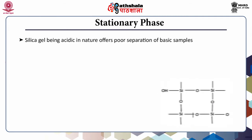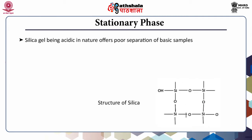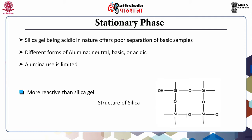Silica gel is acidic in nature and thus offers poor separation of basic samples. Different forms of alumina are available: neutral alumina, basic alumina, and acidic alumina. However, alumina cannot separate large sample sizes unlike silica gel under a given layer thickness. Alumina is also more reactive compared to silica gel, which limits its uses.